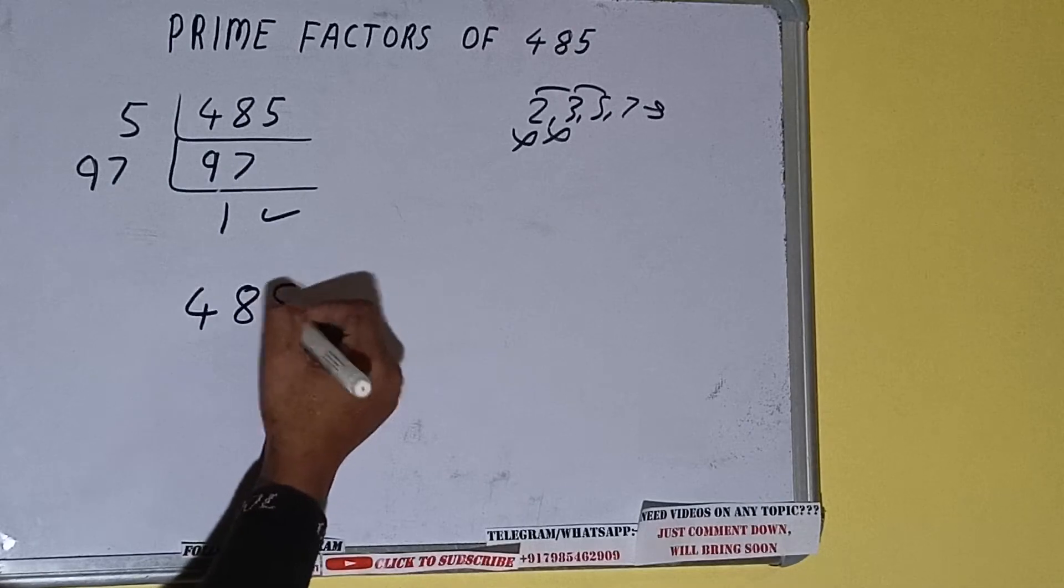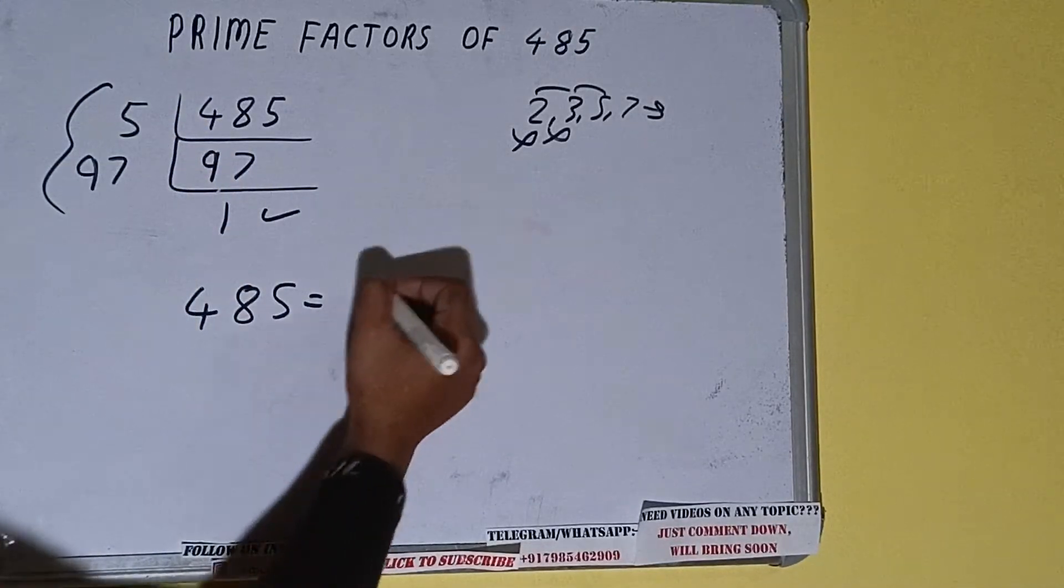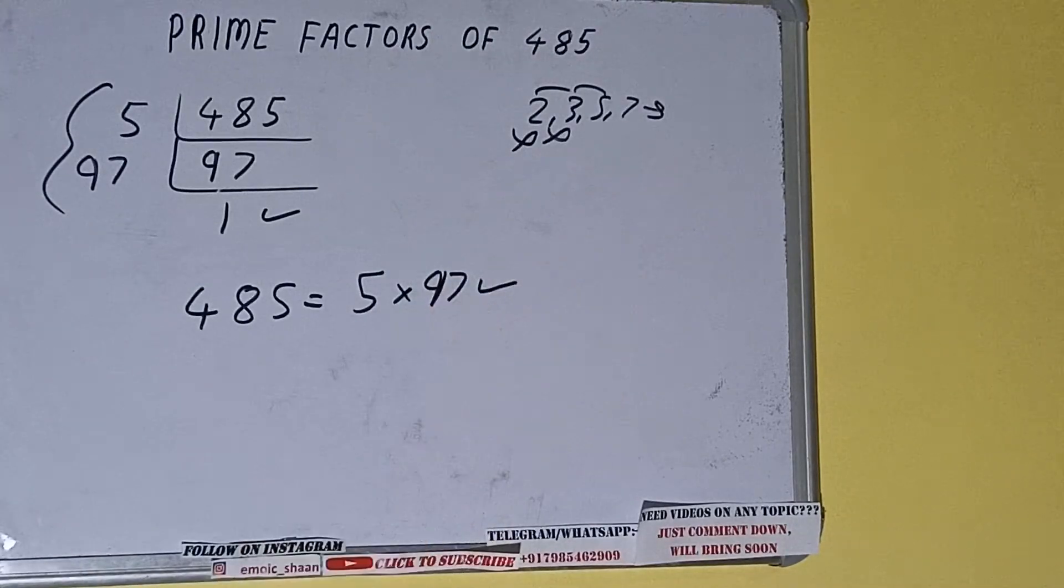that is, prime factors of 485 is equal to whatever we have on the left-hand side, that is 5 cross 97. That will be the answer. So this is all about prime factors of 485. So if you found